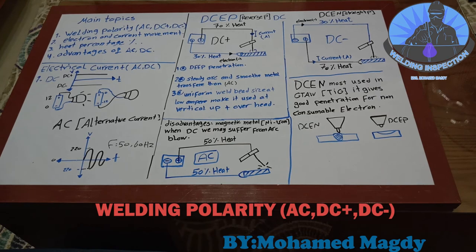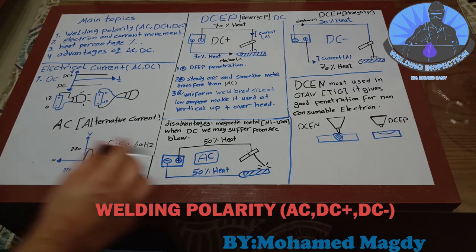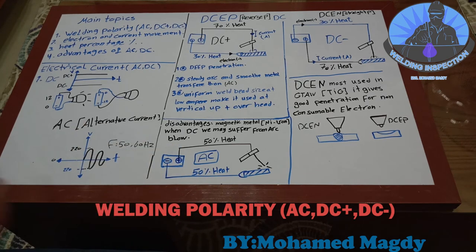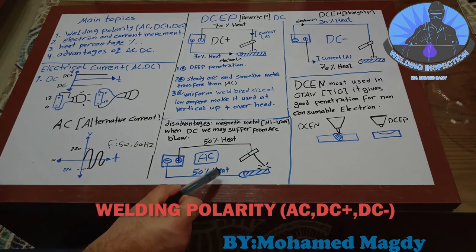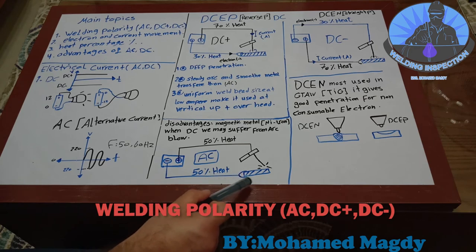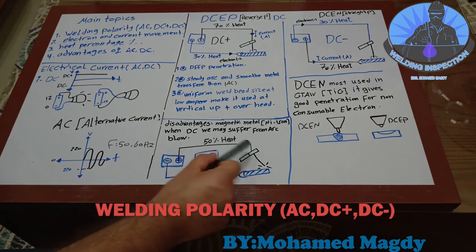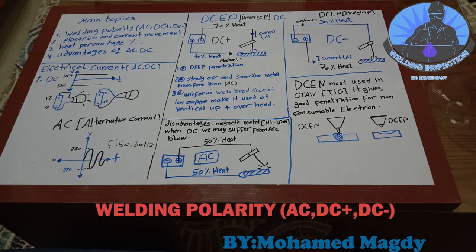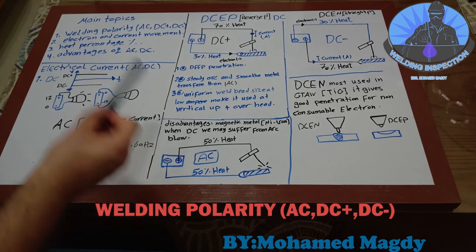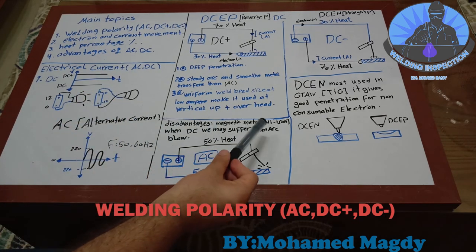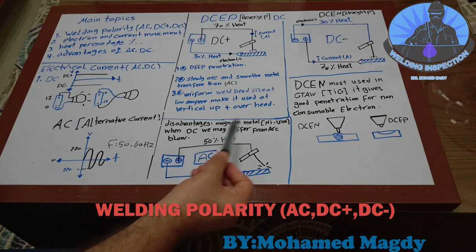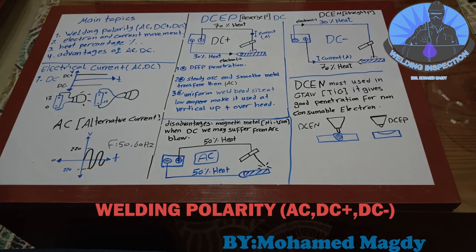When we don't want to suffer from arc blow, or when we are welding aluminum and need a cleaning action, we switch to AC. AC has half of heat and electrons in the workpiece and half at the electrode. For magnetic metals like nickel and iron, DC may cause arc blow — using AC solves the arc blow problem.